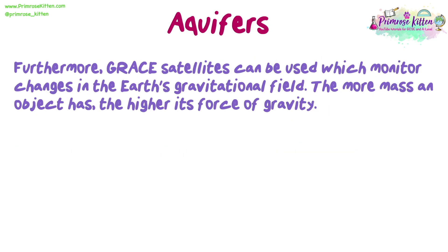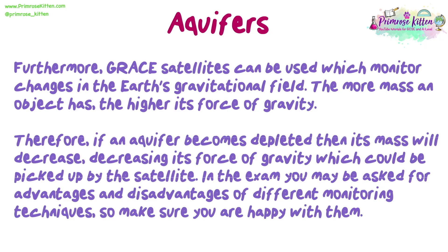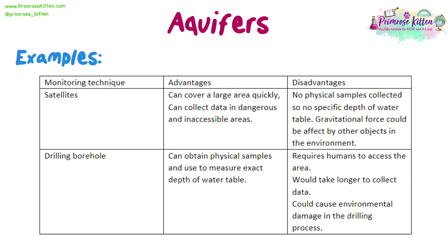Furthermore, GRACE satellites can be used, which monitor changes in the Earth's gravitational field. The more mass an object has, the higher its force of gravity. Therefore, if an aquifer becomes depleted, then its mass will decrease, decreasing its force of gravity, which could be picked up by the satellite. In the exam, you may be asked for advantages and disadvantages of different monitoring techniques, so make sure you're happy with them. Here are some examples of the monitoring techniques with advantages and disadvantages to add to your notes.